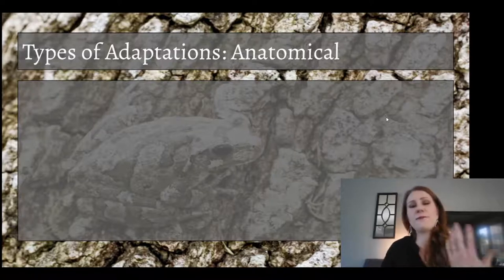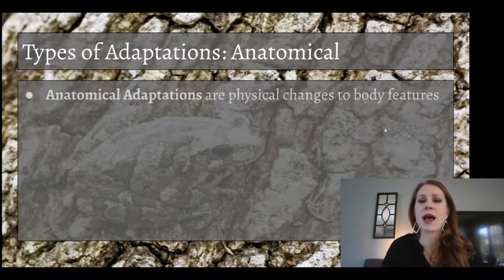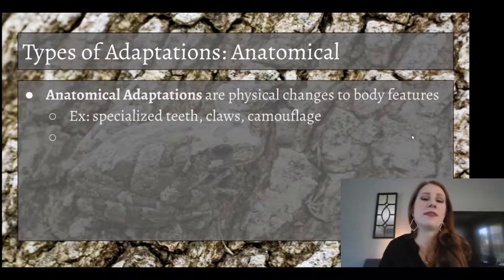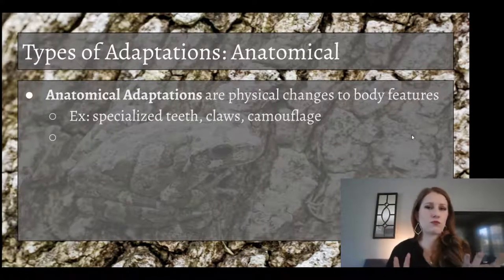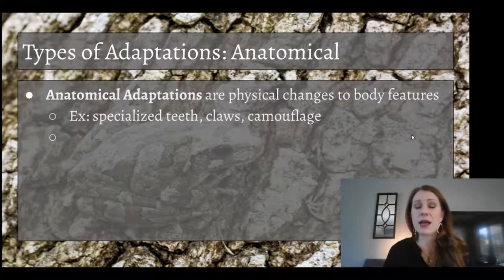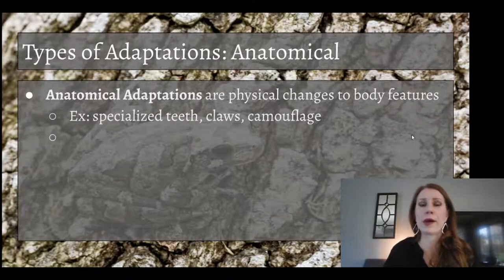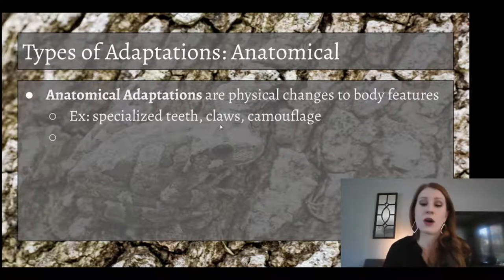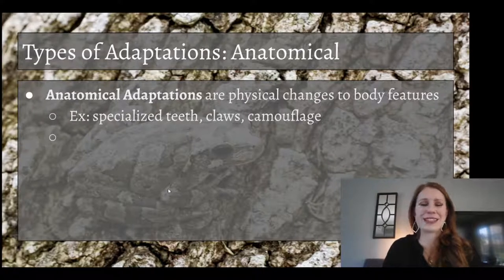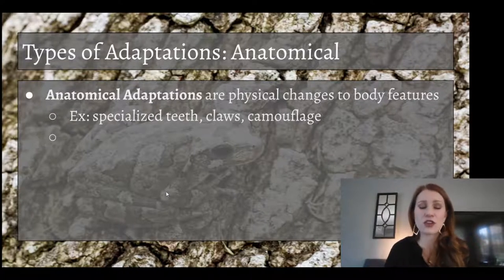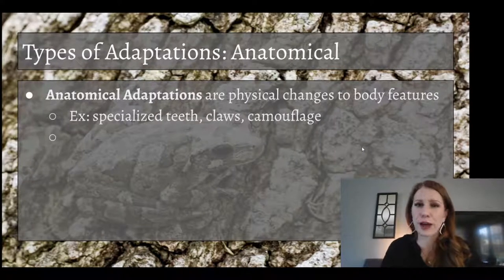We have a couple of different types of adaptations. The first are anatomical adaptations, which are physical changes to body features. These are the easy ones to see — things like specialized teeth, whether they're flat or pointed, for either chewing plants or meat. Flat teeth, like a horse has, are for chewing plants, and pointed teeth, like a tiger or a wolf, are for chewing meat. Claws help for defense, ripping apart meat, or digging. Camouflage is one of the biggest anatomical adaptations we see frequently, especially in the animal kingdom. The frog on this slide is displaying camouflage as one of its adaptations to survive better in its environment.